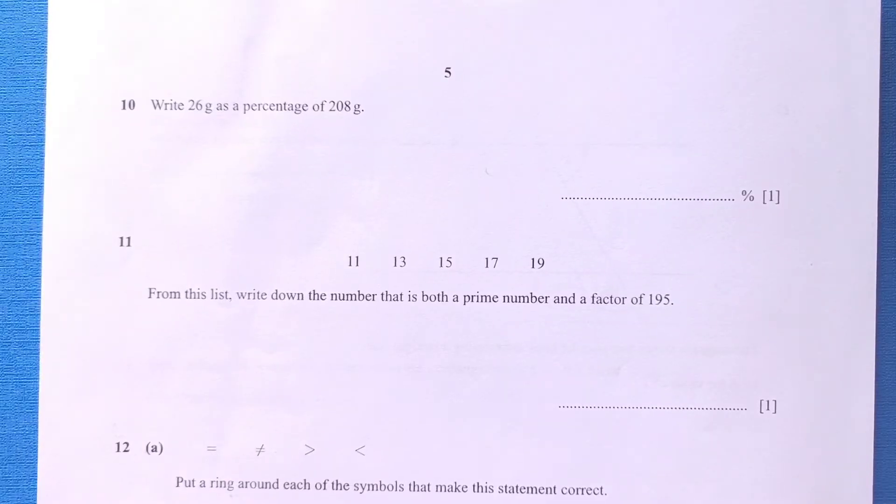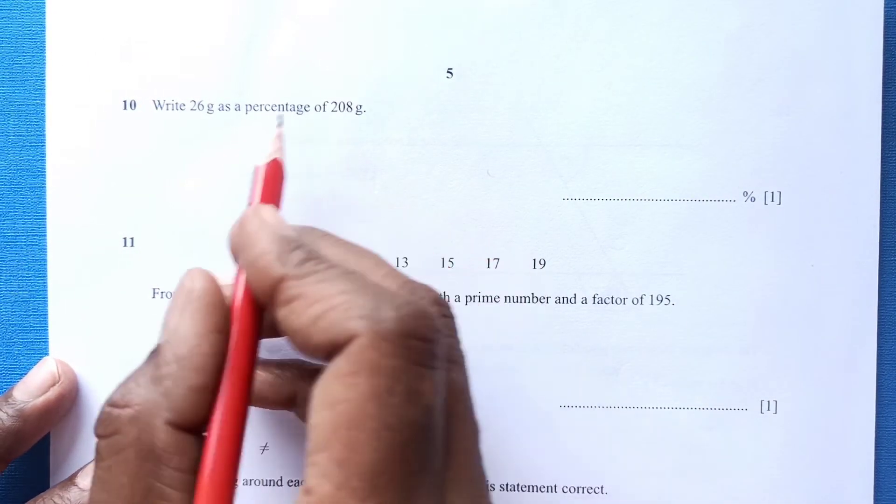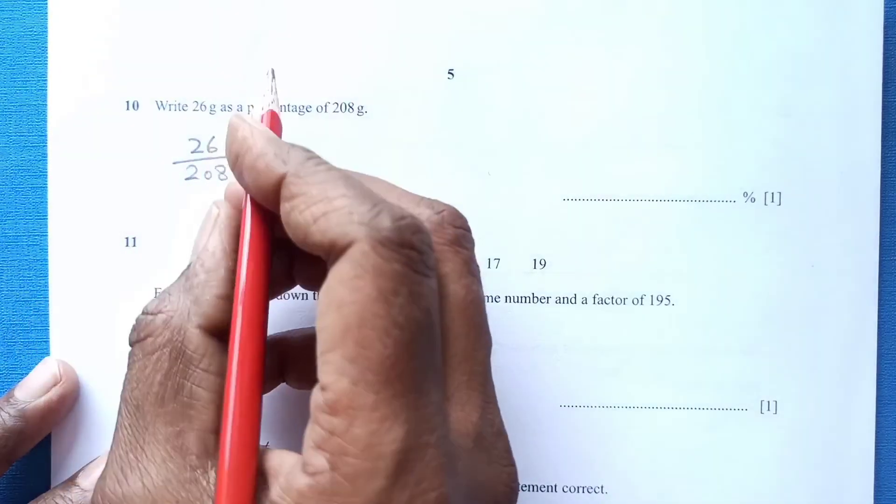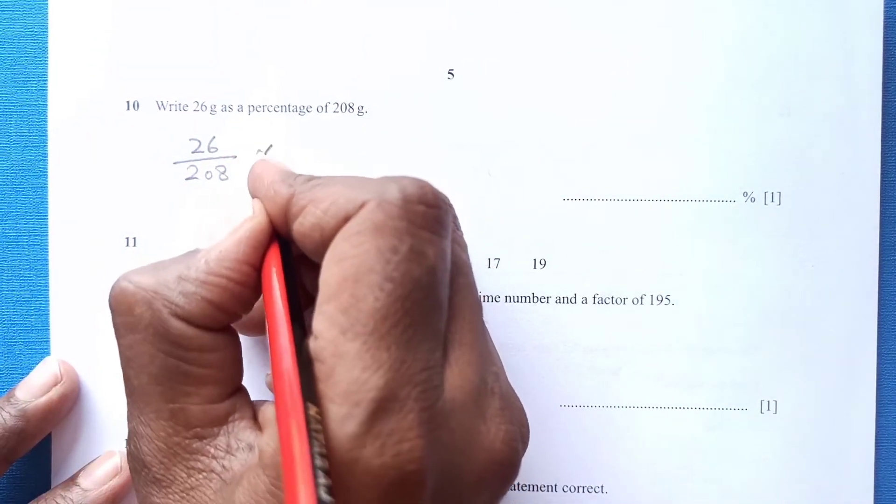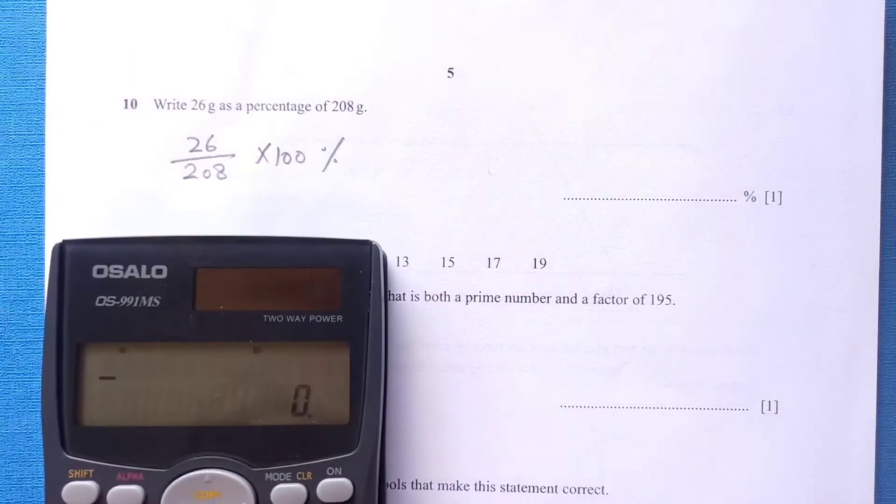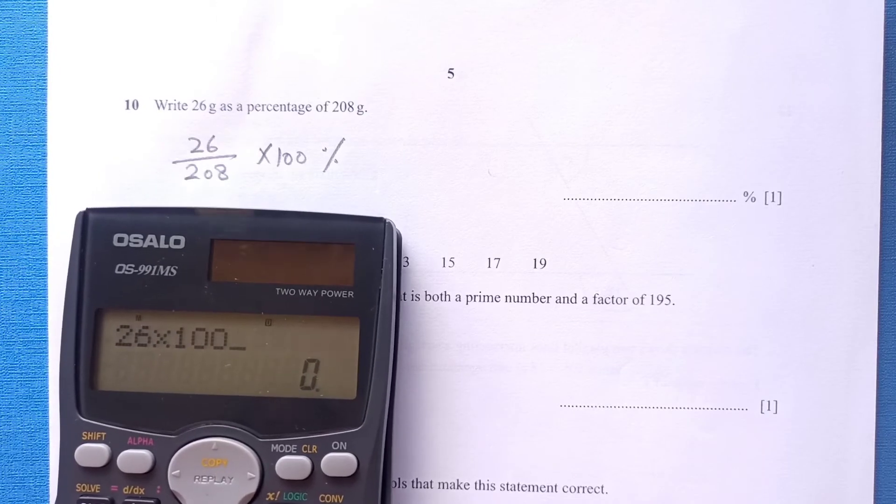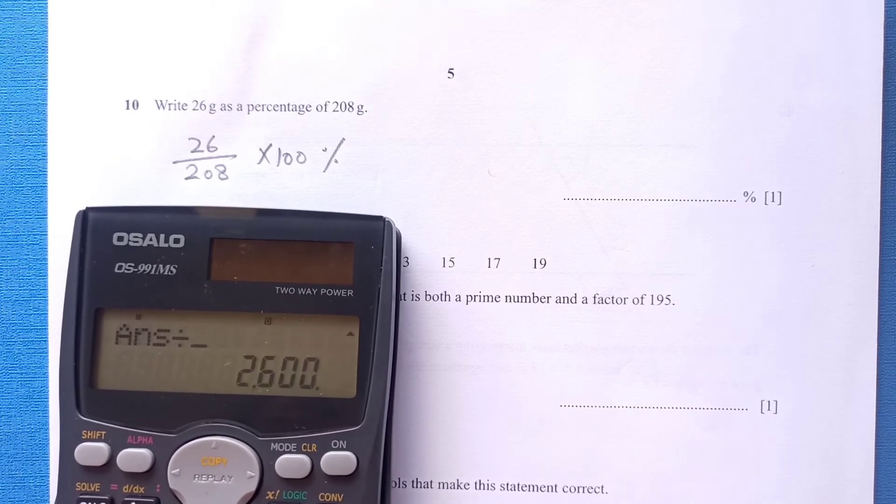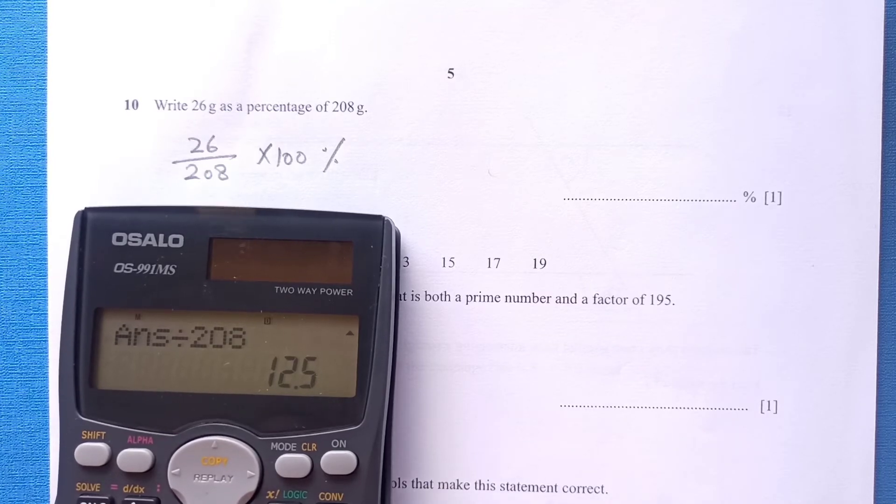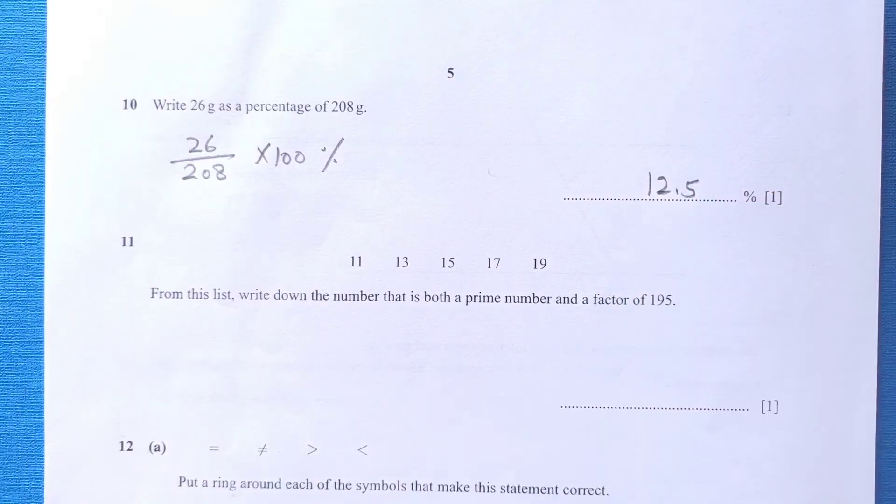Number 10: Write 26 grams as percentage of 208. 26 out of 200, but we are looking for the percentage. That means times 100 will give you the percentage. You can use directly the calculator: 26 times 100 divided by 208. It is 12.5.